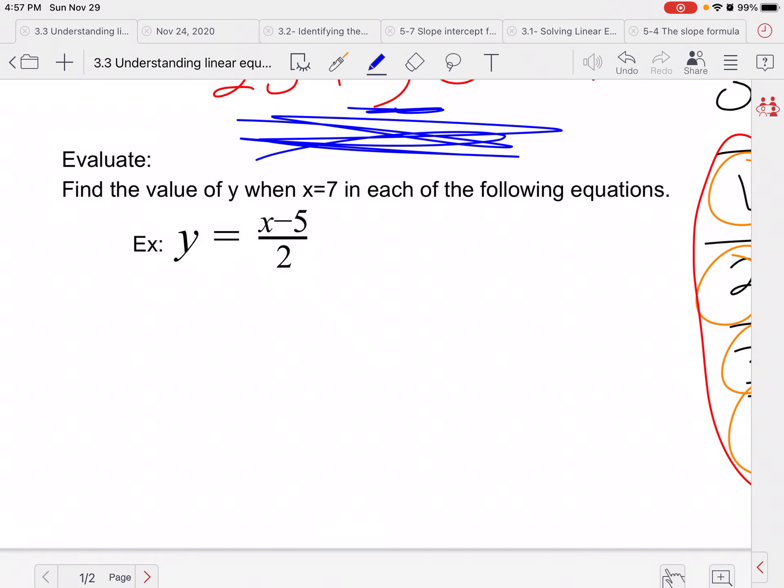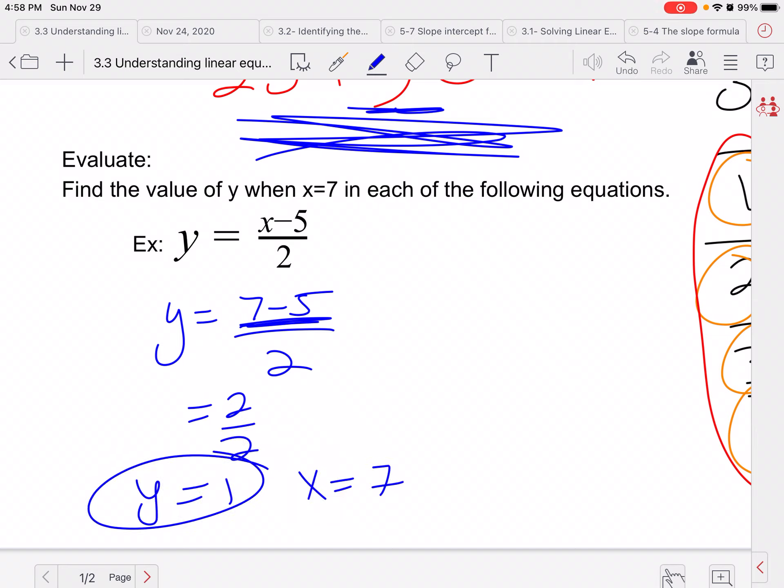Now, for something a little bit easier, we want to find the value of y when x is 7 for each of the following equations. All we're going to do is, instead of writing x, we're going to write 7. So we're going to have y equals 7 minus 5 over 2. And then we're going to combine like terms. 7 minus 5 is 2 over 2, which equals 1. So when x is 7, y equals 1.